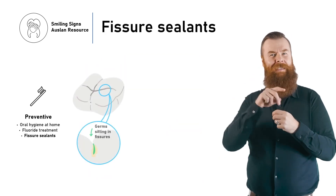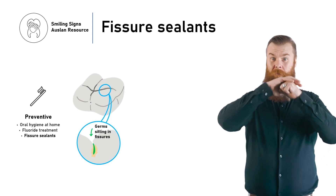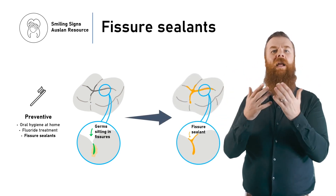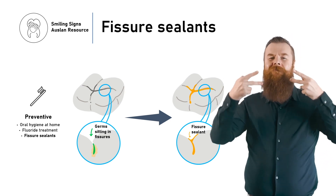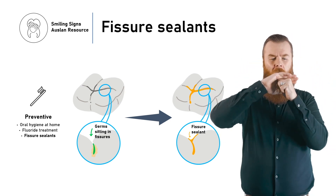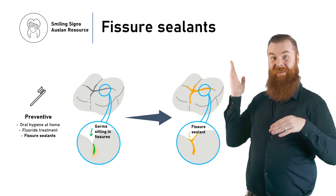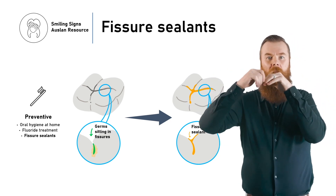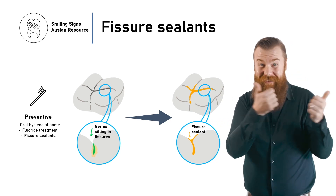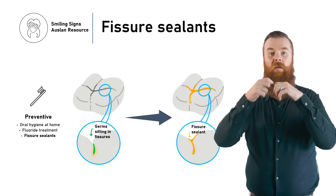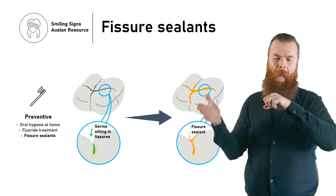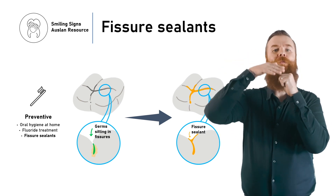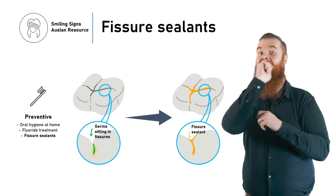Fissure sealants are another way your dentist can protect teeth from germs that cause tooth decay. All back teeth have grooves called fissures. Some of these grooves are very deep and this may cause food and germs to get stuck. These grooves may be so deep that it can be hard to clean them out, even with good brushing. Fissure sealants fill up these grooves so that germs cannot get inside and cause tooth decay.